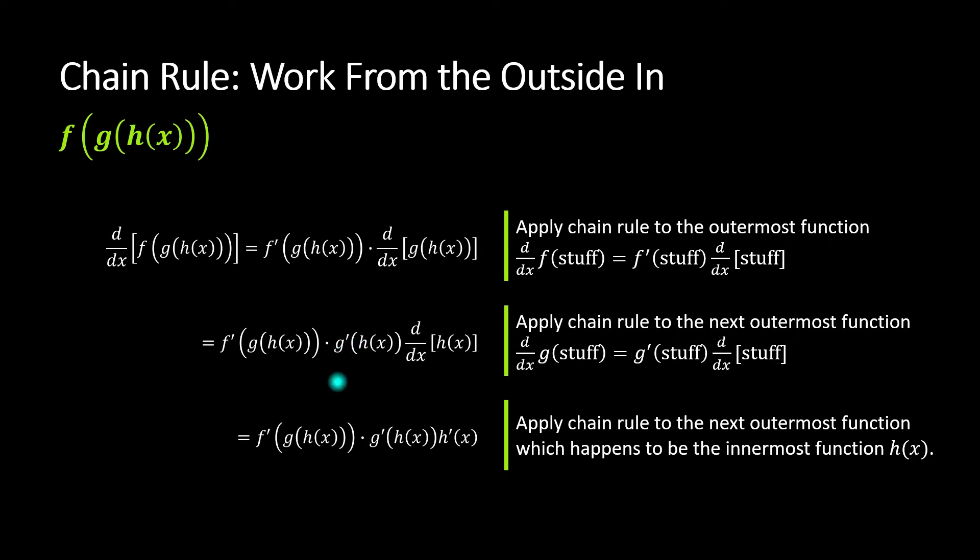We did f' of stuff times derivative of that stuff, then we did the derivative of that stuff, which was g' of stuff times derivative of that stuff again. Then we did derivative of that piece, so we did it one layer at a time. Doing it this way makes it much less likely that you'll make an error.